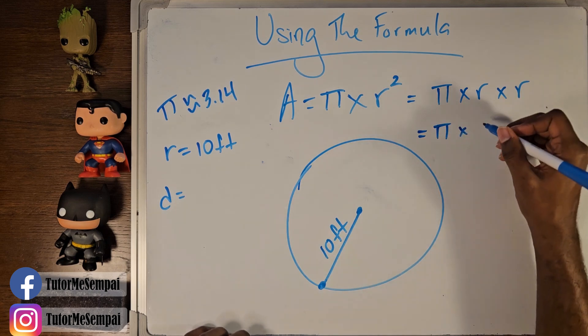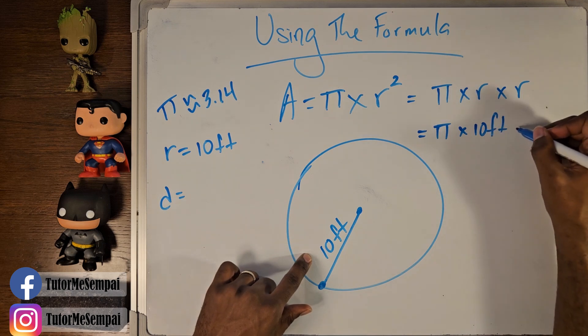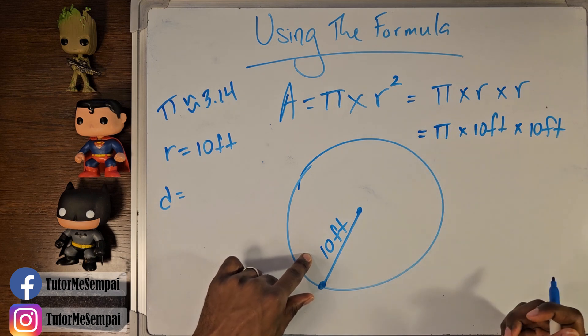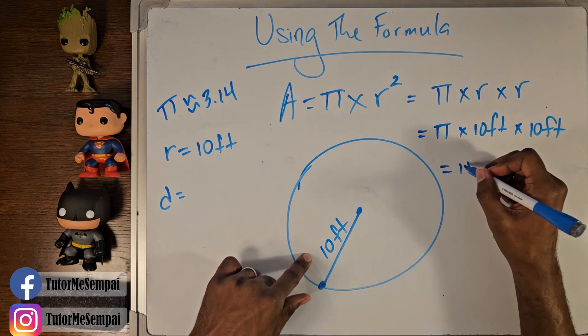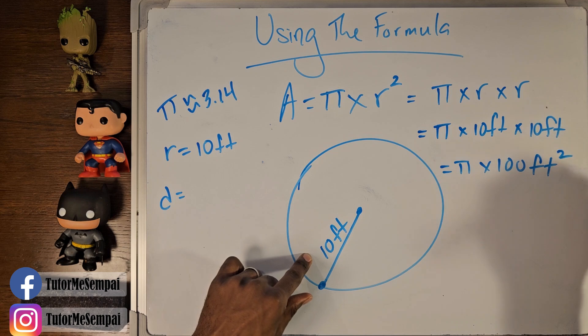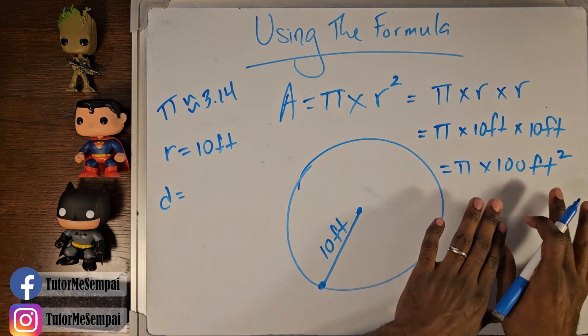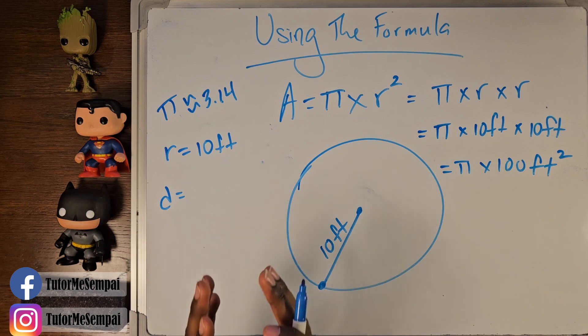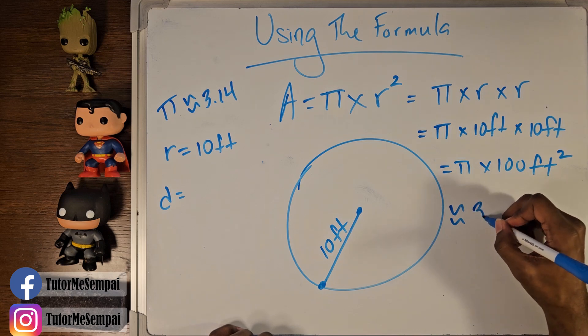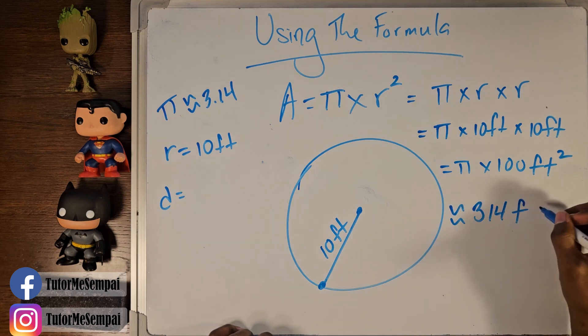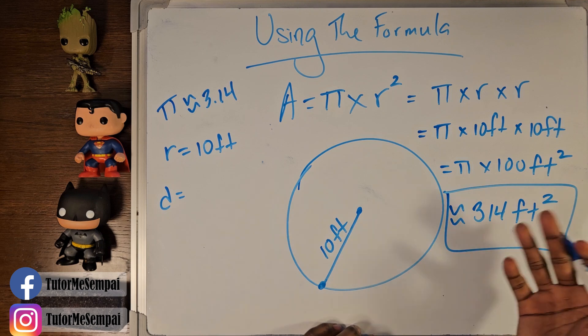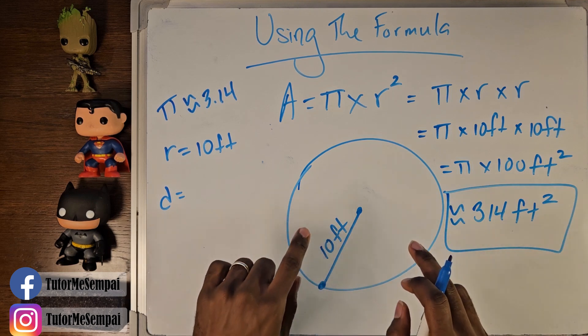So there's going to be pi times 10 feet times 10 feet. Now, what's 10 feet times 10 feet? Well, that's going to be pi times 100 feet squared. Remember, square units. Now, once again, that's the exact value, but if you plug it into your calculator, you can get a rounded value of 314 feet squared. This will be the area or the rounded approximate area of this circle.